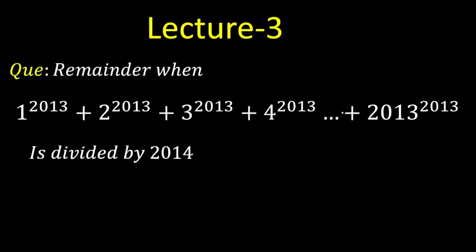Hello everyone. Today in lecture 3 we are going to start with a basic problem on modular arithmetic — a really good problem for starters, though not a difficult question, it is a good question in number theory. The question is: find the remainder when 1^2013 + 2^2013 + ... + 2013^2013 is divided by 2014.